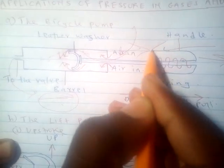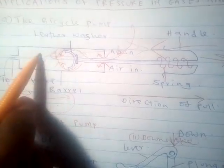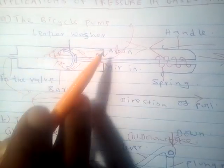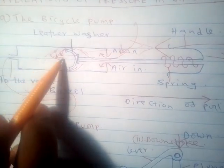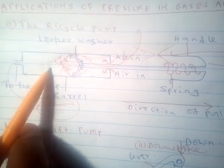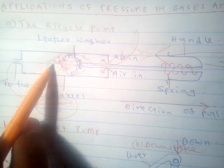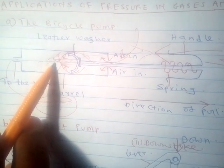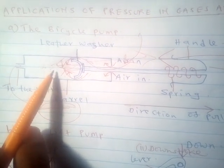When the handle is pushed down, the leather washer is also pushed down. Remember there is air that has been added in here due to atmospheric pressure, so the air below the leather washer is compressed. When the leather washer is pushed down, the air inside the barrel is compressed. Whenever air is compressed, its volume reduces, and when the volume reduces, the pressure increases.